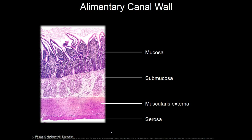Here is the microscopic view of the alimentary canal wall showing its different layers. At the top we have the lumen, then the mucosa with epithelial cells and the lamina propria attaching them, then the submucosa with gland lumens that secrete mucus into the mucosal layer, then the muscularis externa with the circular layer and the longitudinal layer, and finally the serosa on the outside.